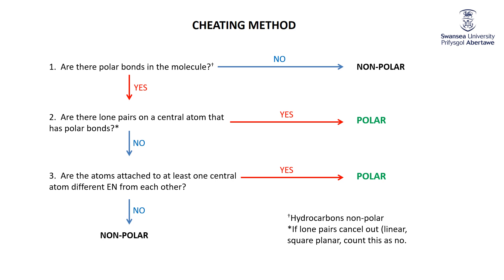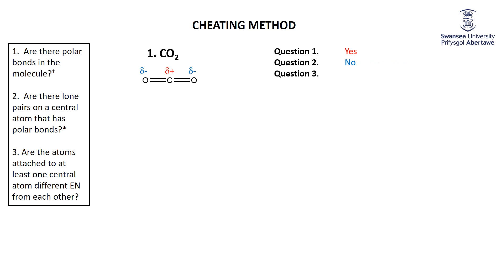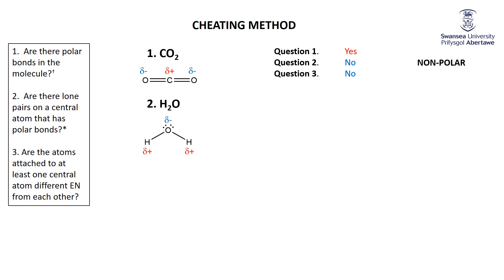Let's apply these rules to three molecules. Carbon dioxide: are there polar bonds? Yes. Are there lone pairs on the central carbon? No. Are the attached oxygens of different electronegativity from each other? No — they're both oxygen, so same electronegativity. Thus CO₂ is non-polar. Water: are there polar bonds? Yes. Is there a lone pair on the central oxygen that has polar bonds? Yes. Therefore, without further analysis, water is polar.